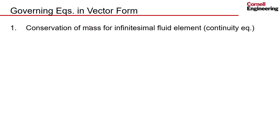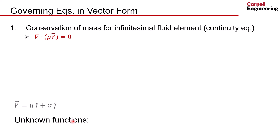The mathematical model consists of governing equations and boundary conditions. First we have the continuity equation — conservation of mass for an infinitesimal fluid element. This is compressible flow so we have to use the compressible form of conservation. We'll assume 2D flow so we have two components of velocity, u and v. Let's start listing out the unknown functions.